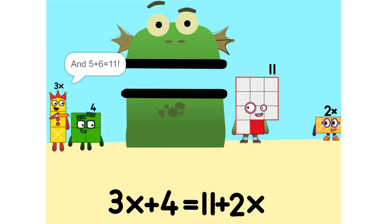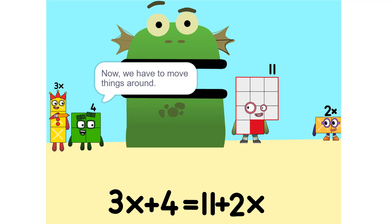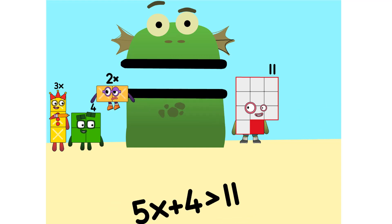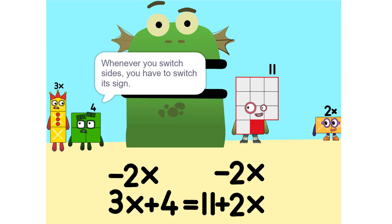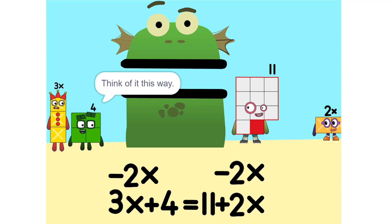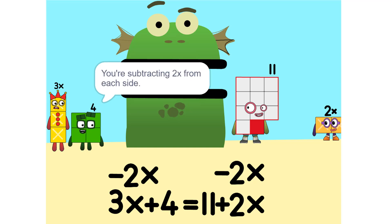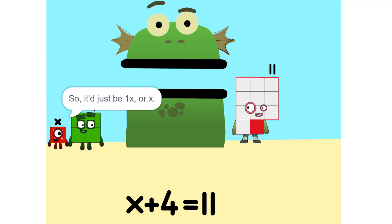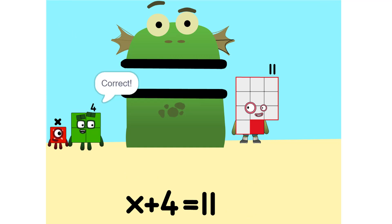And 5 plus 6 is 11. Now we have to move things around — we have to move this 2x to this side. So 5x. Whenever you switch sides you have to switch its sign, so if it's positive it becomes negative and vice versa. Why? Think of it this way: you're subtracting 2x from each side. Oh, so it'd just be 1x or x. Correct.